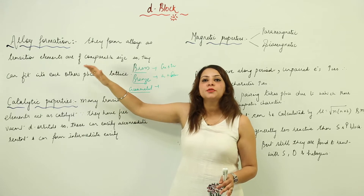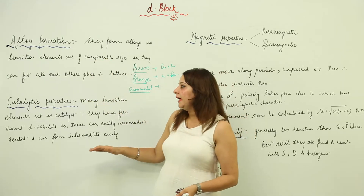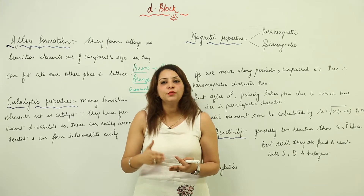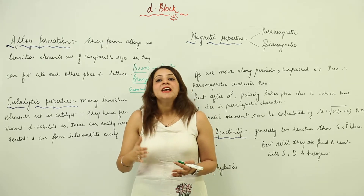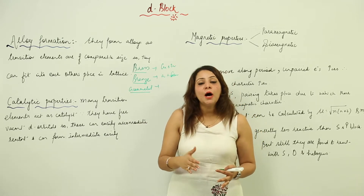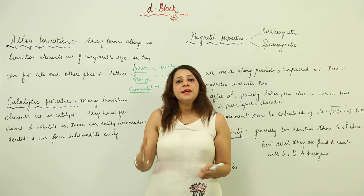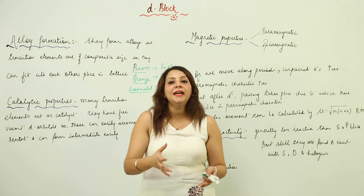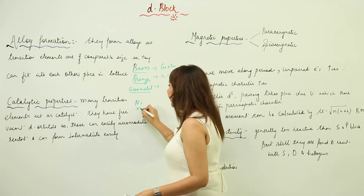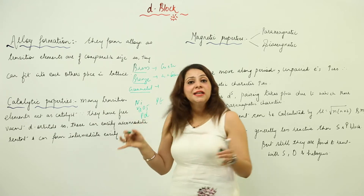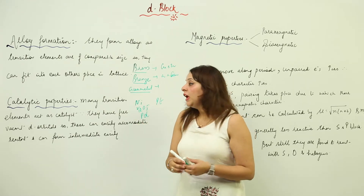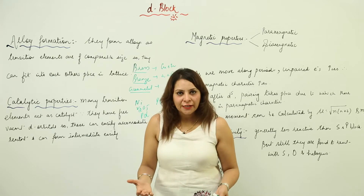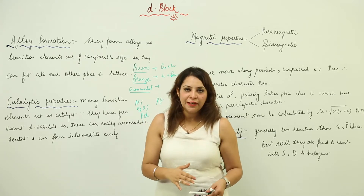Transition elements are generally found in the composition of many alloys. They also have catalytic properties. A catalyst is a substance which can affect the rate of reaction without undergoing any change in itself. Many transition elements play the role of catalyst — for example, nickel, vanadium pentoxide, palladium, and platinum are all transition elements acting as catalysts.